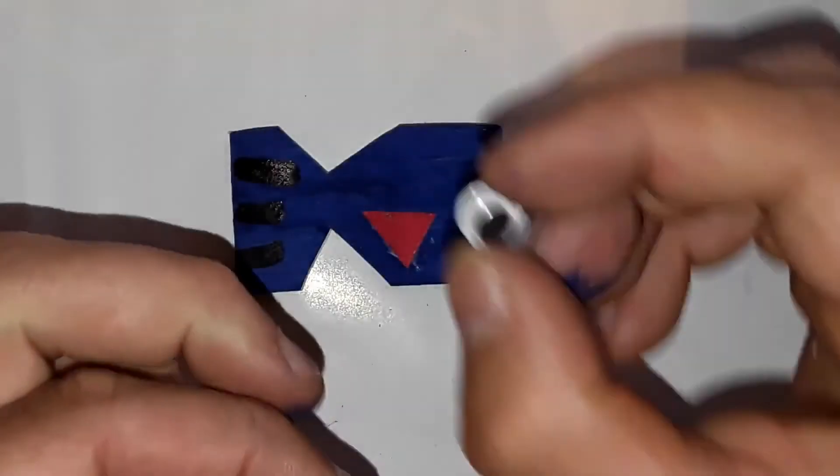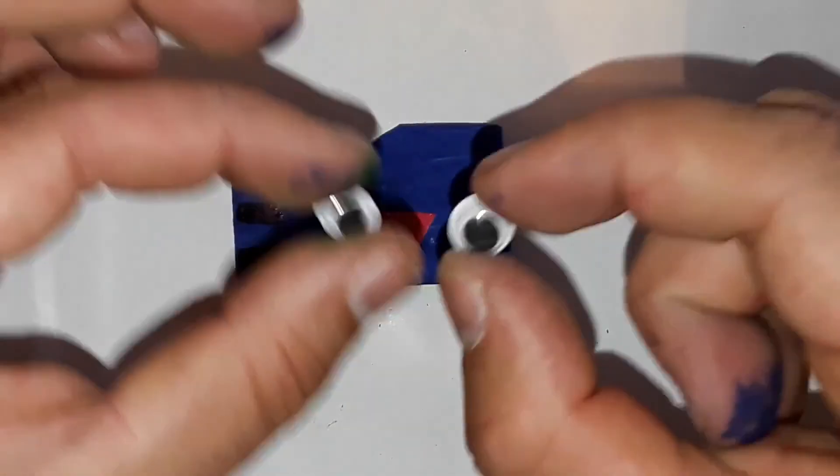Now we come to the last step. Here we glue on the googly eyes, if you have them. Otherwise you can simply draw or paint the eyes.